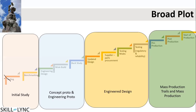Then comes the concept proto and engineering proto — these are processes where we build a mule that looks like a design-intent component and do some testing. Then we do a buck study. A buck study is typically done for interiors. For example, if you have designed a seat system inside your car and you really don't know how it looks, you create a realistic proto of the 3D interiors and do an ergonomic study. In the buck study, you allow persons of various heights, both male and female, to sit in the vehicle and take their feedback in terms of accessibility, comfort, and thigh support. Once everything is frozen, that is one part of the buck study.